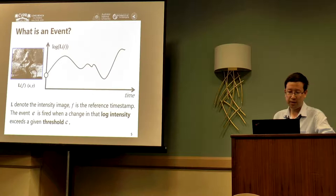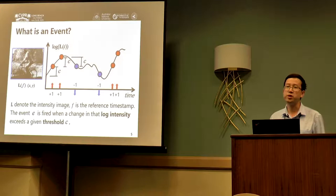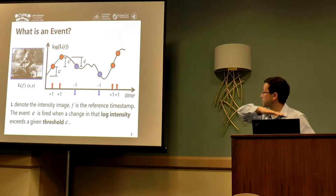For the event camera, we generally record the change in the intensity image. Once the change exceeds a predefined small number like c, then there will be an event triggered, which would be positive or negative. If it does not exceed the threshold, there will be no change.